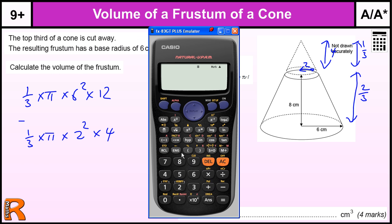Bring the calculator in for that, and we can pretty much type this all into the calculator. 1 over 3 times pi times 6 squared times 12 subtract 1 over 3 times pi times 2 squared times 4.